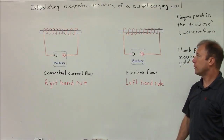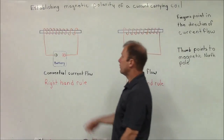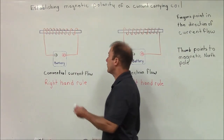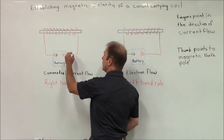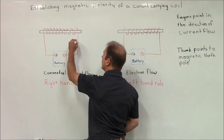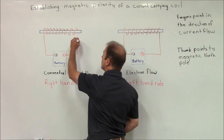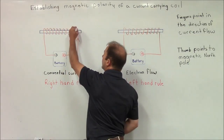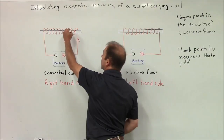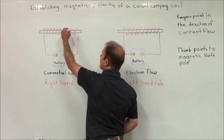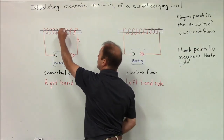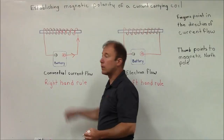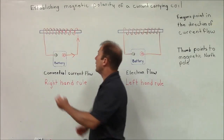We want to establish current flow — in this case conventional current flow. Current is flowing this way, from positive to negative. And you can see the way the current will flow on the coil.